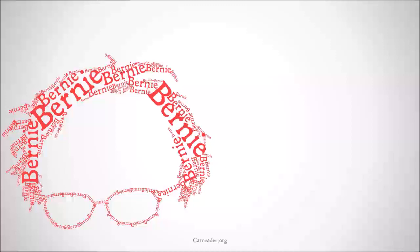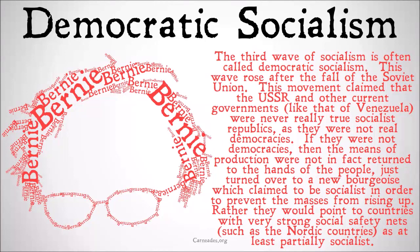The third wave of socialism is often called democratic socialism. This wave rose after the fall of the Soviet Union. This movement claimed that the USSR and other governments such as that of Venezuela were never truly socialist republics because they weren't real democracies. If they were not democracies, then the means of production were not in fact returned to the hands of the people — they were given to the state. And if the state isn't owned by the people in an important way, those people don't actually share in the profits.